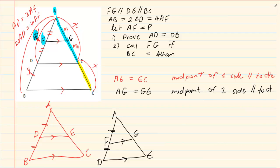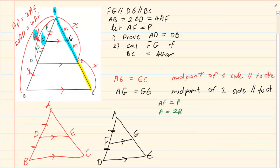Now if they say let AF equal P, that would mean that FD is also equal to P. We need to prove that AD is equal to DB. Now if we have that AF is equal to FD, and they are both equal to P, then we have that AD is equal to 2P — because AF plus FD gives us AD.